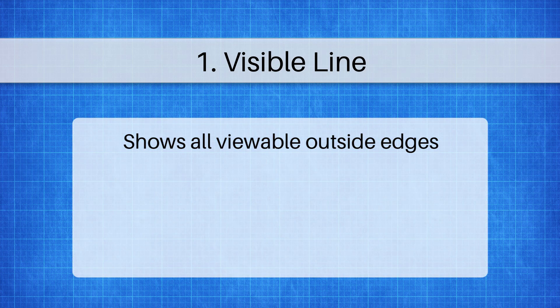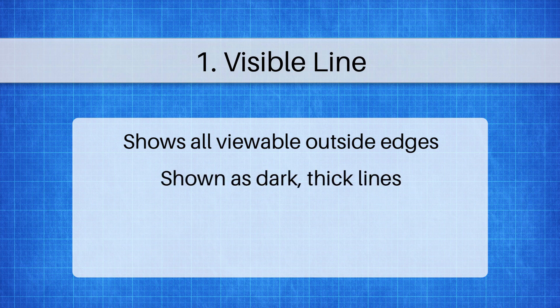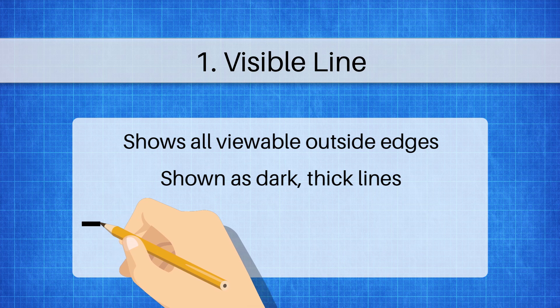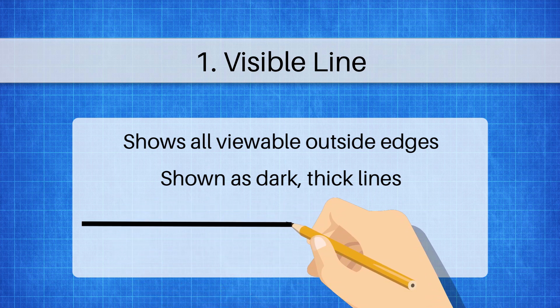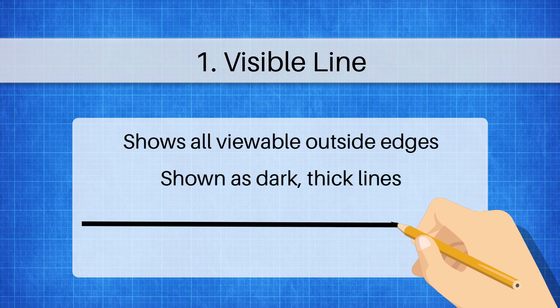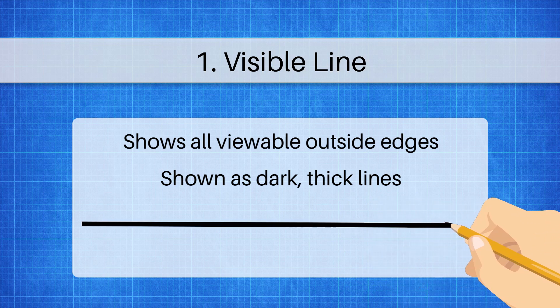The first and most important line is the visible line. It shows all of the outside edges of an object and they're represented by thick dark black lines. They are made to be seen, they are the boss, they're in charge. It's the first one on the list of precedents and it's the only one that matters when there's anything else underneath.